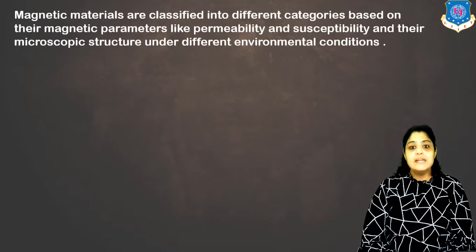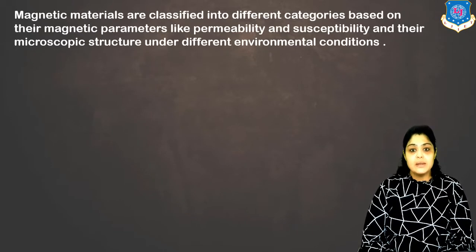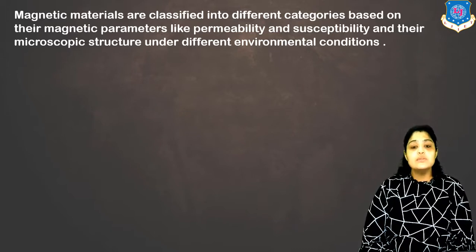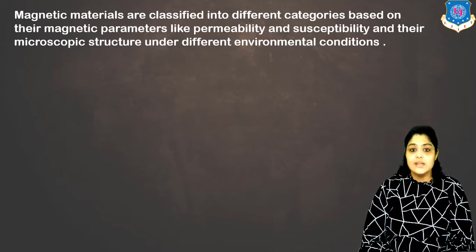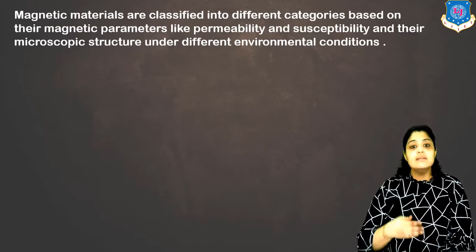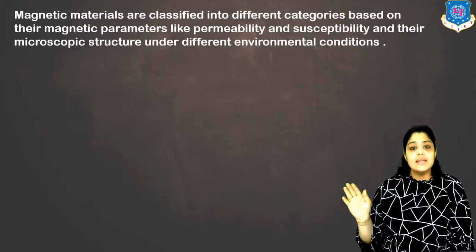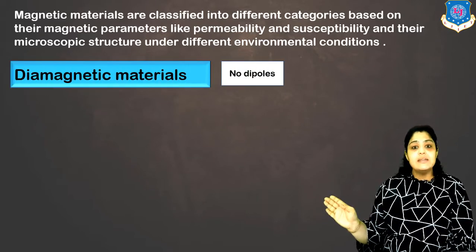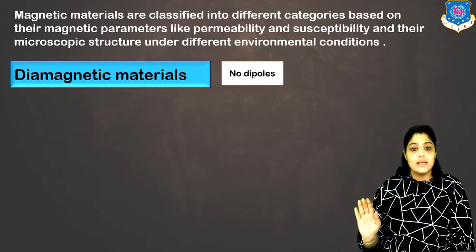Magnetic materials are divided into different categories depending upon magnetic parameters like susceptibility, permeability and how the microscopic structure changes under different environmental conditions. According to these parameters, the magnetic materials are divided into the following categories, starting with diamagnetic materials, which are magnetic materials which do not have permanent dipoles.